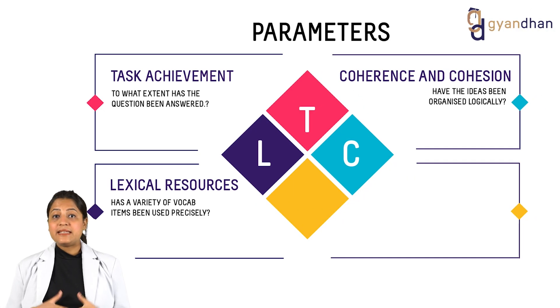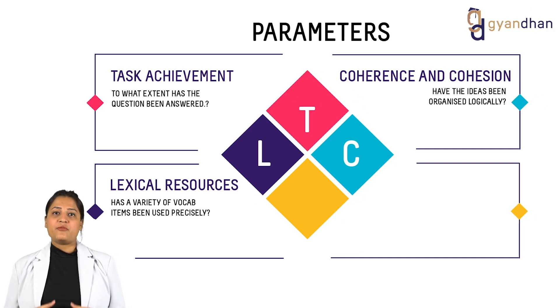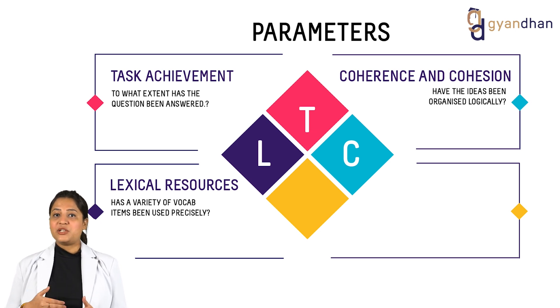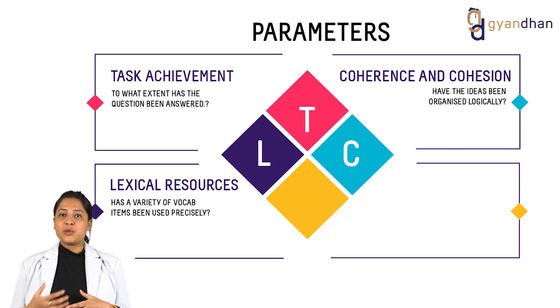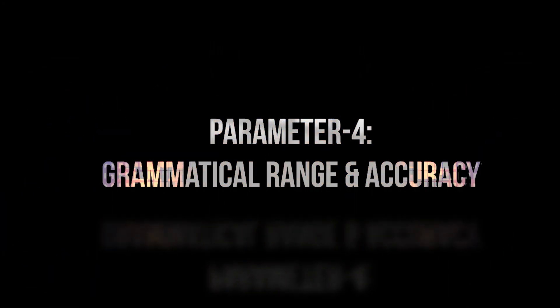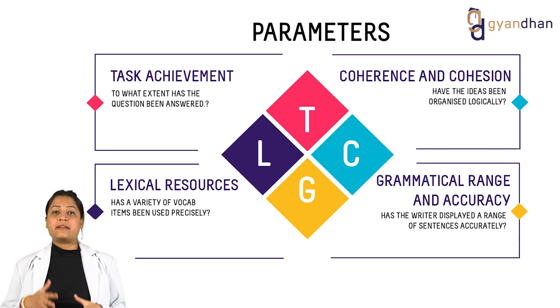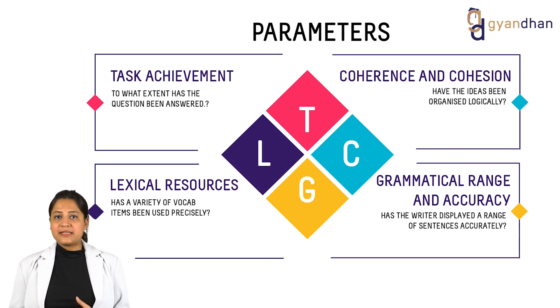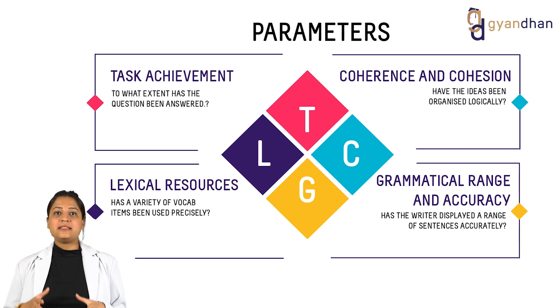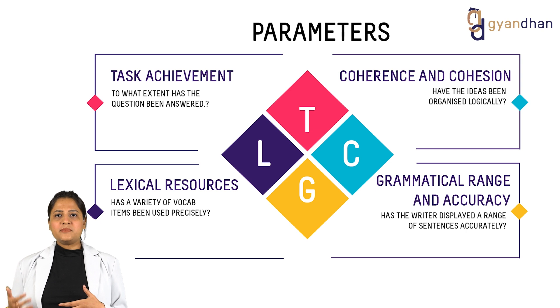The next parameter is lexical resources, which means vocabulary used in the task. You should be able to use a wide variety of words without much repetition, and the words should be used precisely to fit in a certain context. Then we have grammatical range and accuracy. As the name suggests, this assessment criteria checks the writer's grammar and their ability to construct a range of sentences. One should be able to communicate their ideas using the right tenses, sentence structures, and other items in their writing.